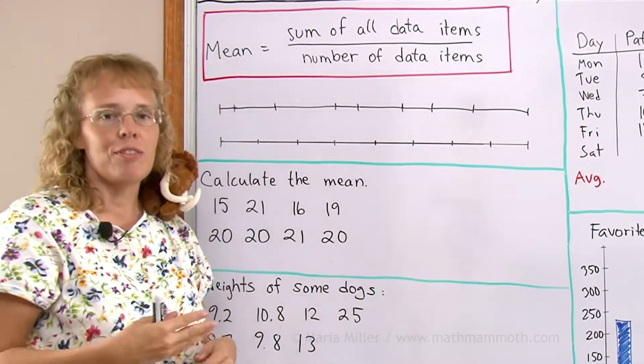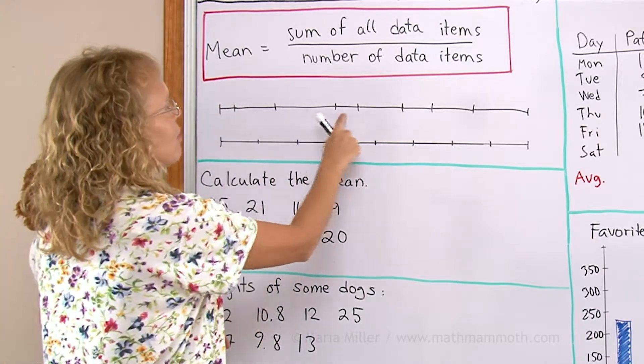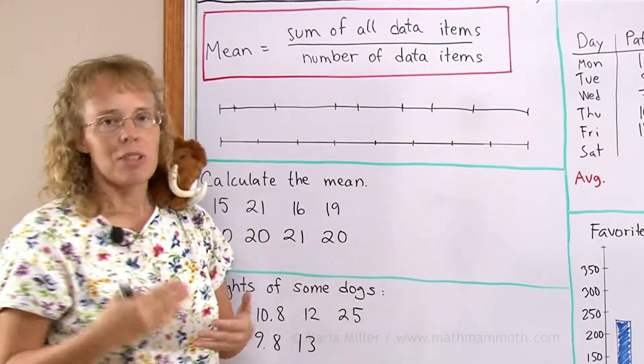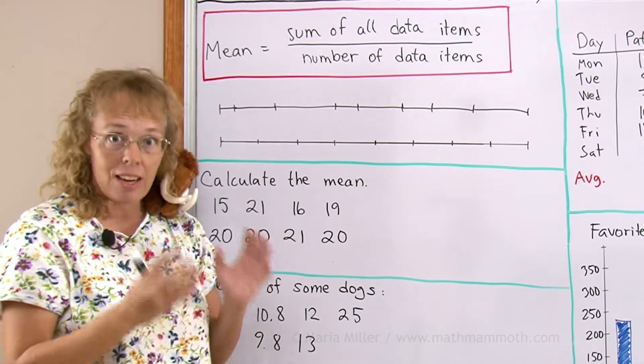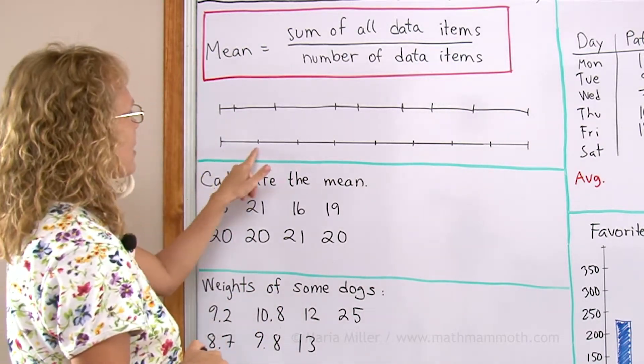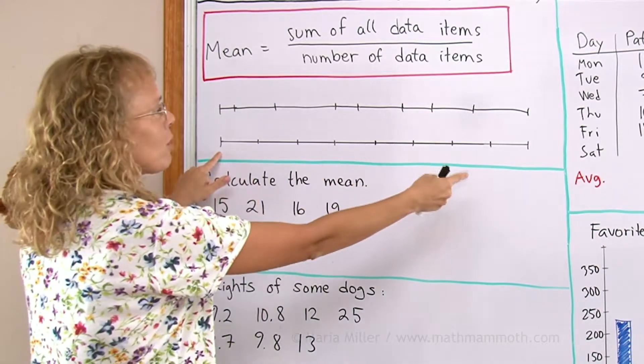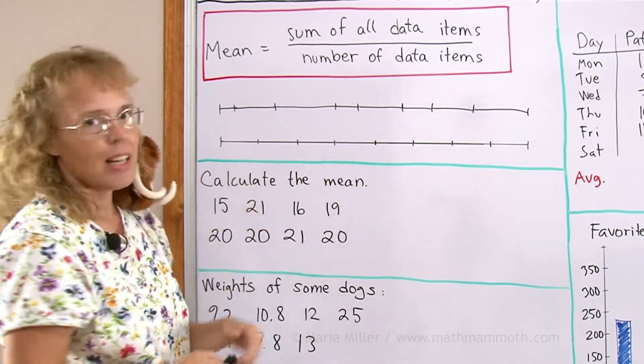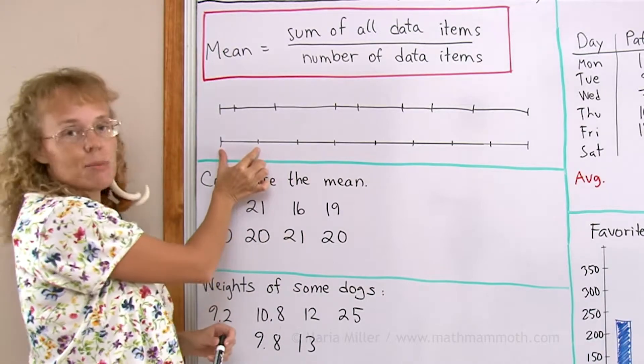And if we divide that by however many there are, one, two, three, four, five, six, seven, eight. We divide that by eight and get the average, get the mean. Then it looks like this. We can divide this whole long line into eight parts equally and this distance would be the mean.